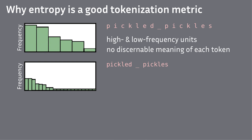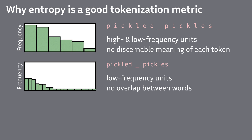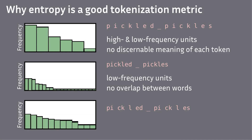In the next case, we have a very large vocabulary — each word is its own unit. That leads to poor generalization and also lower entropy, because the distribution is imbalanced. The last one has meaningful units and, because it's closer to a uniform distribution, has high entropy. Both our intuition and the metric select this one.